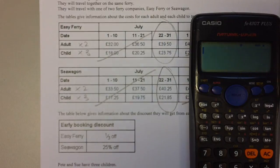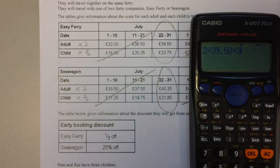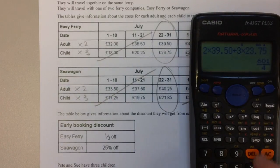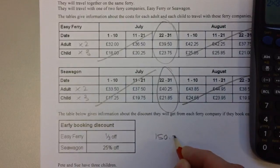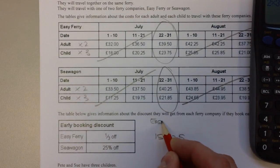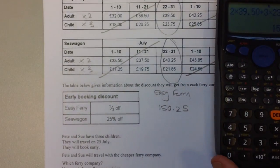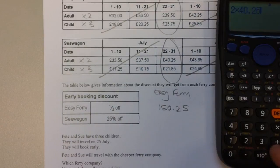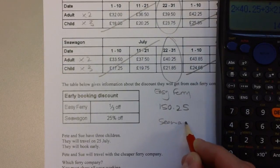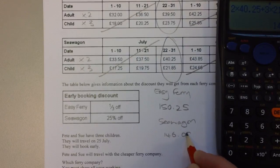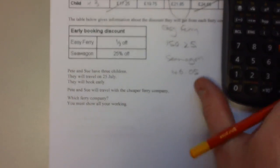For Easy Ferry, two adult tickets at a cost of £39.50 each, plus three child tickets at a cost of £23.75 each, is £150.25. That needs to be written down somewhere on your page and you need to identify that that's the total cost for Easy Ferry. And then again for Sea Wagon, two tickets at £40.25 and three tickets at £21.85 is a total cost of £146.05. Now we need to apply the discounts and see which is going to be cheaper.